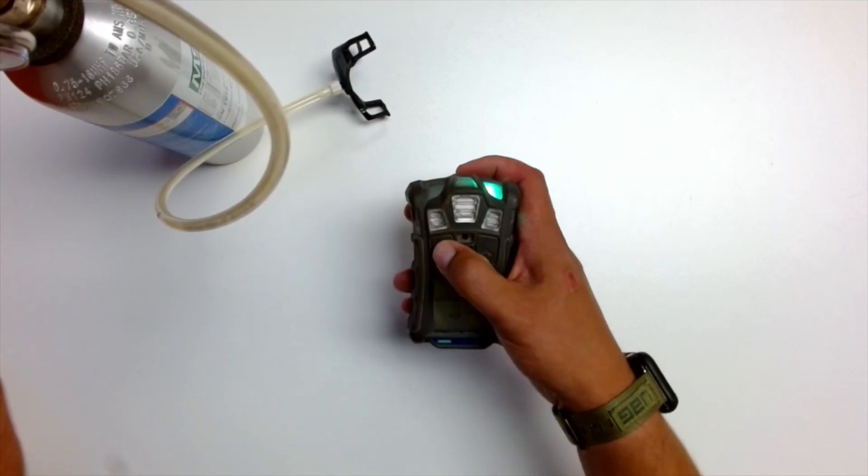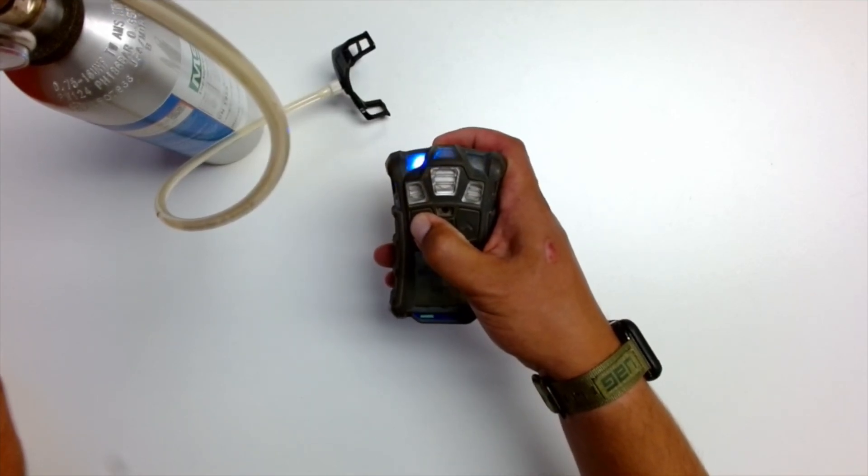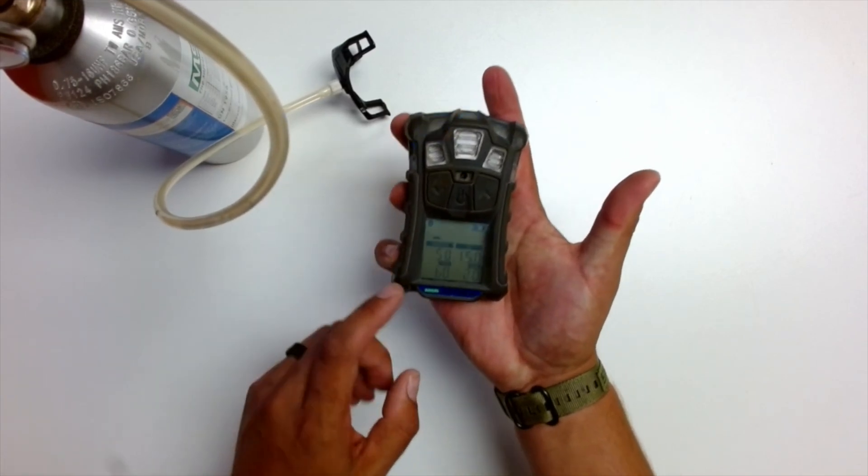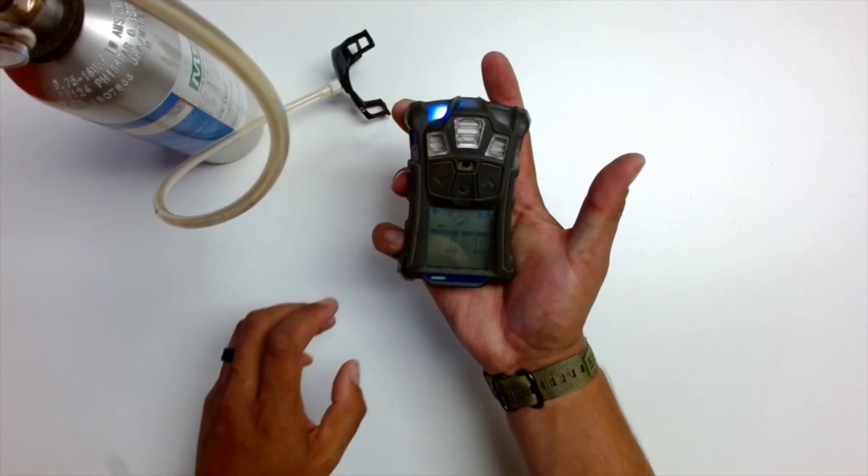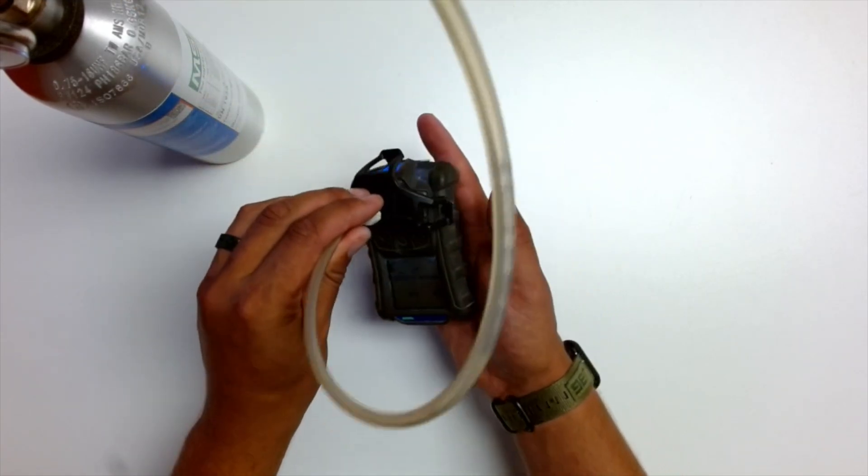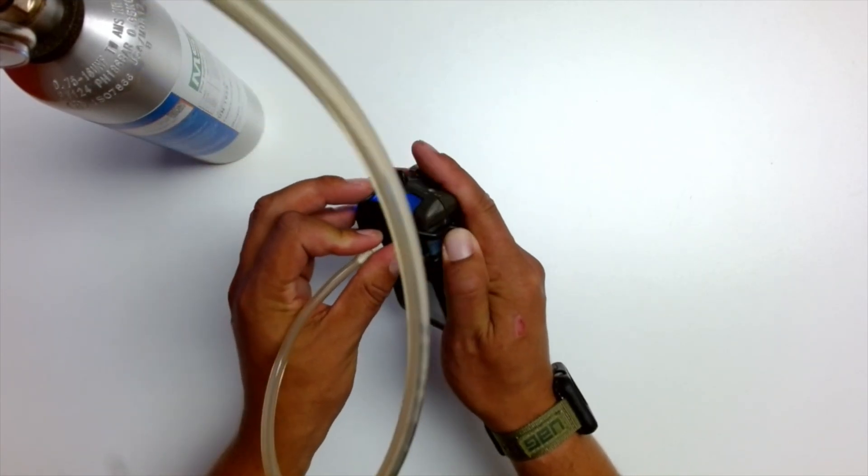All right, so what we're going to do is push and hold the down button to start our manual bump test. You'll see it's asking if we want to do a bump test here. Push the middle button to accept, and then we'll add our face clip to the monitor.